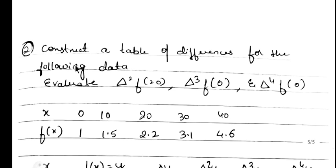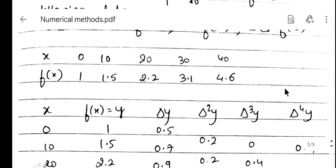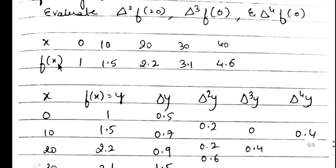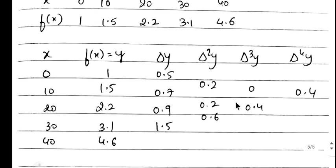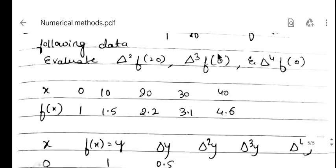Now the second example: construct a table of differences for the given data, and evaluate delta² f(20), delta³ f(10), and delta⁴ f(0). Since y = f(x), write x values with corresponding y values. The first differences: 1.5 - 1 = 0.5; 2.2 - 1.5 = 0.7; 3.1 - 2.2 = 0.9; 4.6 - 3.1 = 1.5. Continue subtracting for higher differences. We stop when we reach a single value.